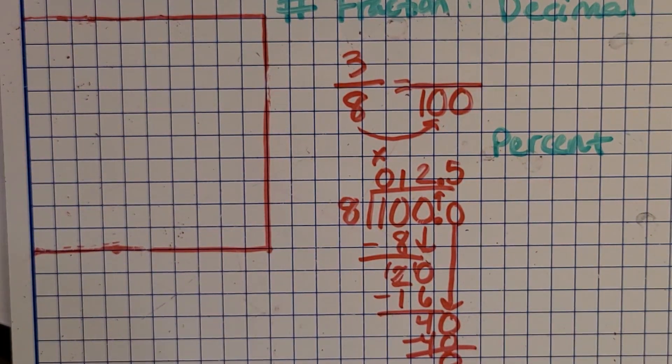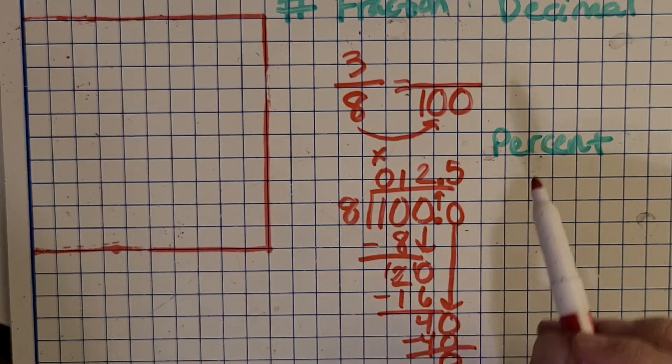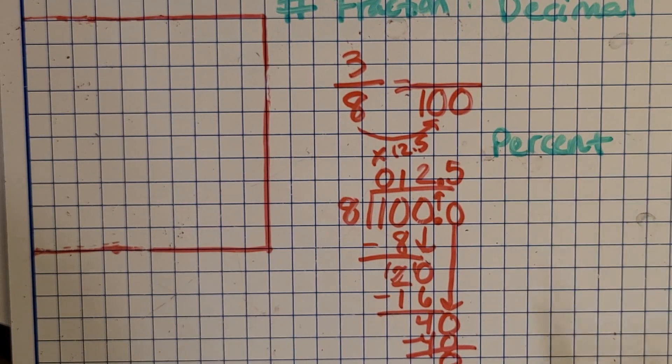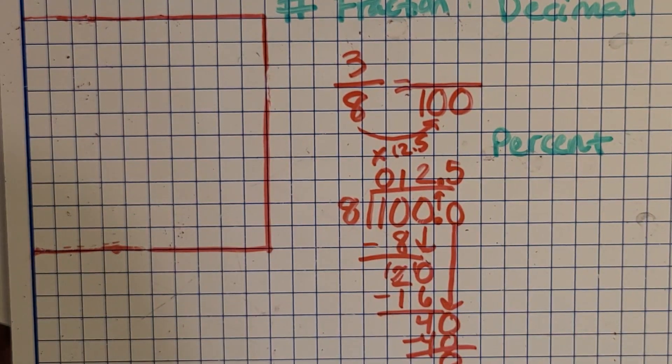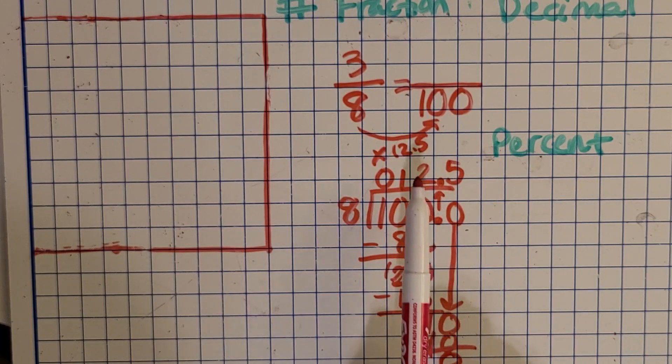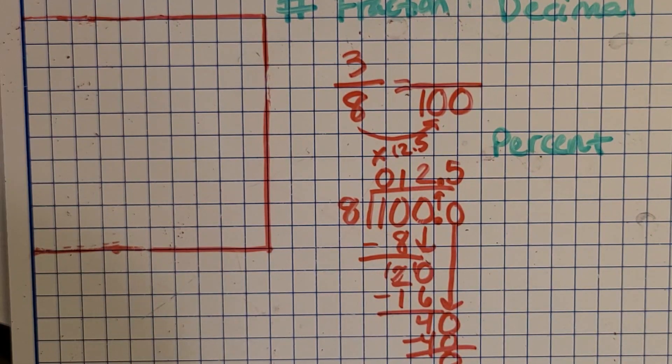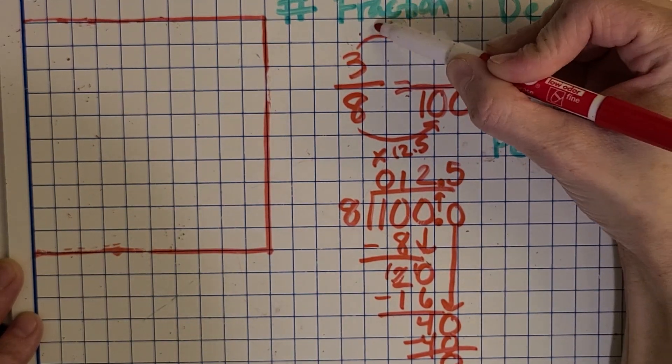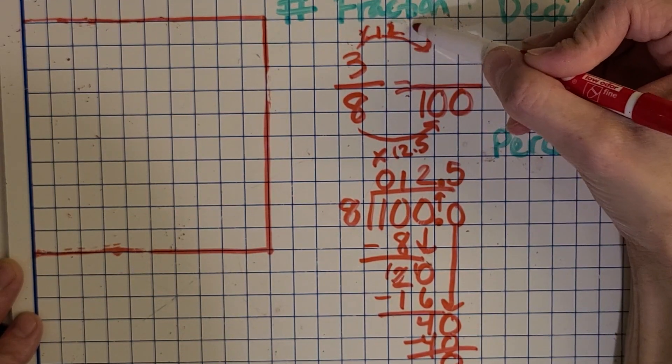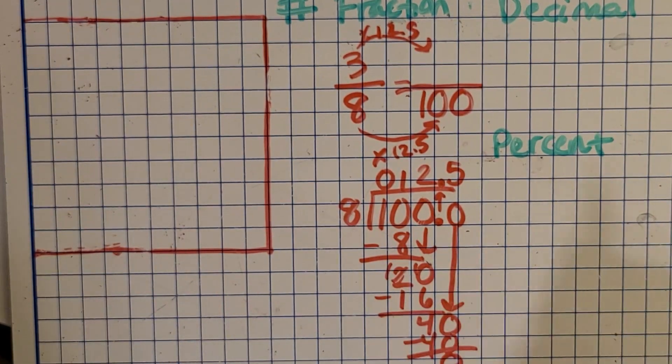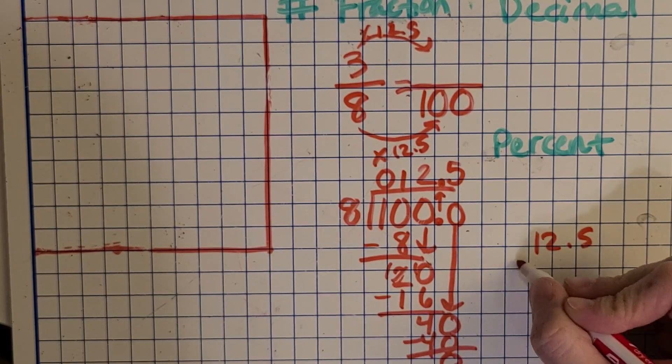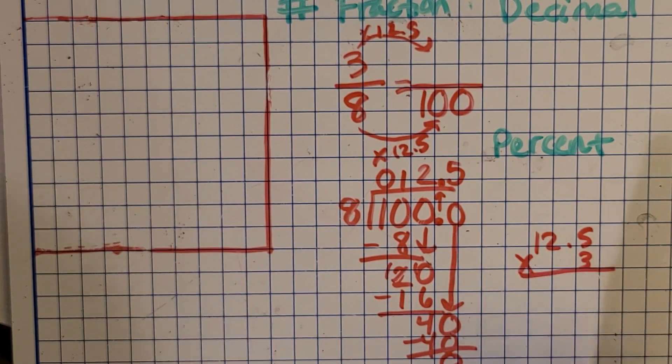And then we don't have a remainder. So it's 12.5. So that means eight times 12.5 is 100. And that's why we didn't just know it off the top of our heads because it's not a whole number answer. It's 12.5. So it makes sense. So now we want to do three times 12.5 to get the numerator. I'm going to set that up down here. So 12.5 times three. And I want you to pause the video again and finish that calculation.